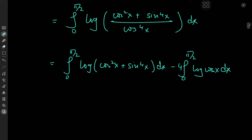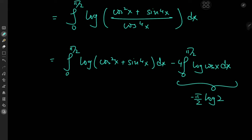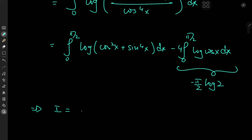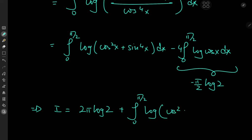So now I have 4 times the integral from 0 to π/2 of log cosine x, which is one of Euler's famous log trig integrals, which evaluates to negative π/2 times log 2. This implies that the target integral I equals 2π log 2 plus the integral from 0 to π/2 of the logarithm of cos²x plus sin⁴x dx.